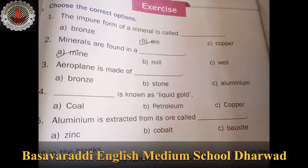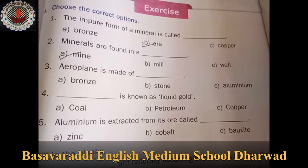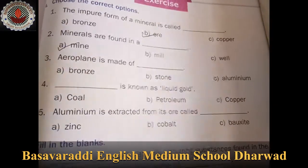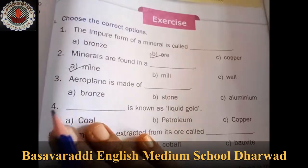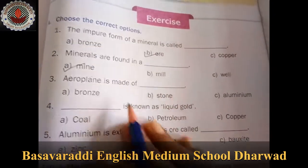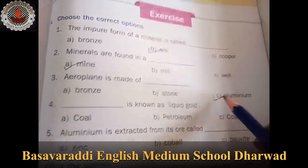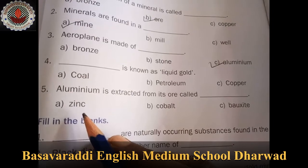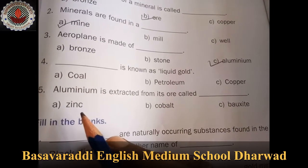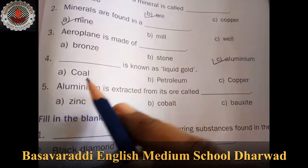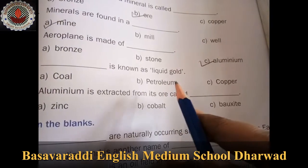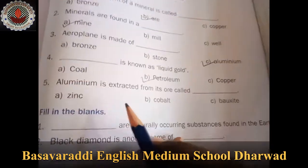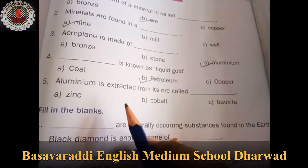Third question: Aeroplane is made of bronze, stone, or aluminium? Aeroplane is made of aluminium. Fourth question: Dash is known as liquid gold — coal, petroleum, or copper? Petroleum is known as liquid gold.